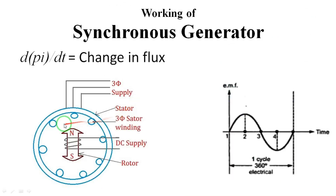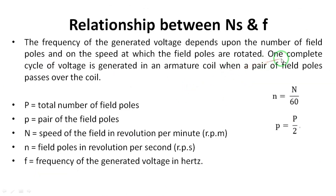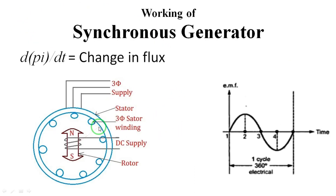One pair of poles means one north pole and one south pole combination. When this one pair rotates 360 degrees, one cycle is generated. If the rotor has two pairs of poles — another north pole and another south pole — then two cycles are generated per revolution. So in one revolution, the number of cycles depends on how many pairs of poles pass over the armature coil.